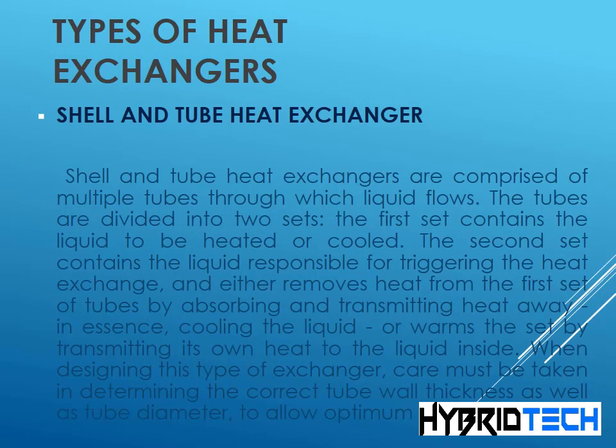Shell and tube heat exchangers are comprised of multiple tubes through which liquid flows. The tubes are divided into two sets: the first contains the liquid to be heated or cooled; the second contains the liquid responsible for triggering the heat exchange, either removing heat by absorbing and transmitting it away — cooling the liquid — or warming it by transmitting its own heat. When designing this type of exchanger, care must be taken in determining the correct tube wall thickness and tube diameter to allow optimum heat exchange.